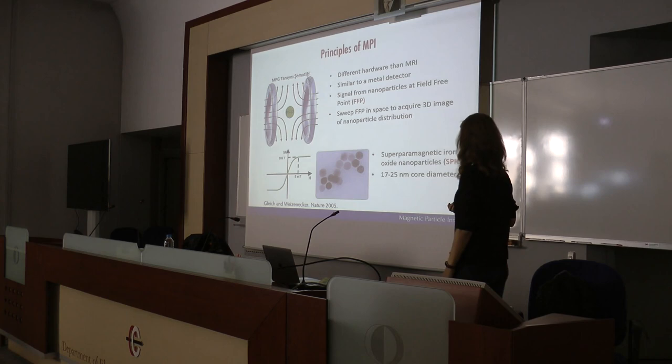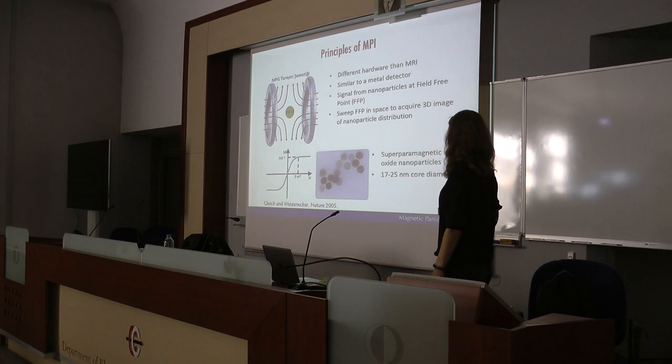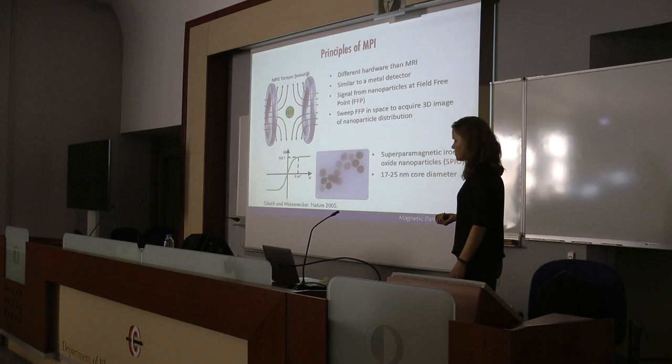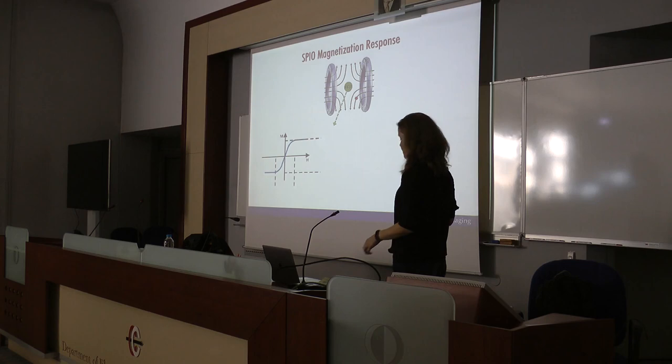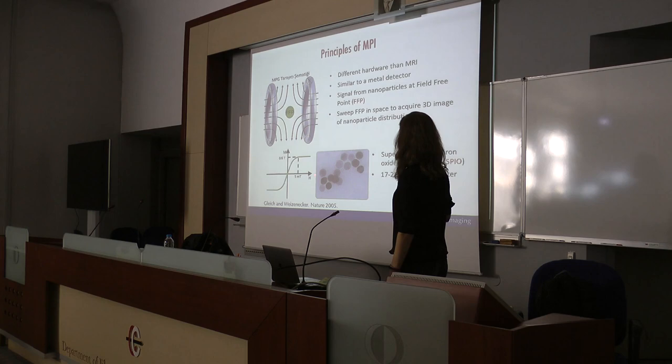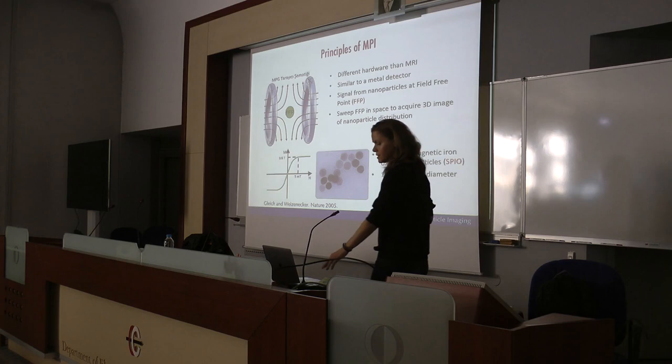The nanoparticles used are superparamagnetic iron oxide nanoparticles known to be safe for use in humans, with typical core sizes from 17 to 25 nanometers. When placed in the MPI scanner, these nanoparticles have a nonlinear magnetization curve — if the applied field exceeds a certain value, the magnetization of the nanoparticles saturates in both directions.